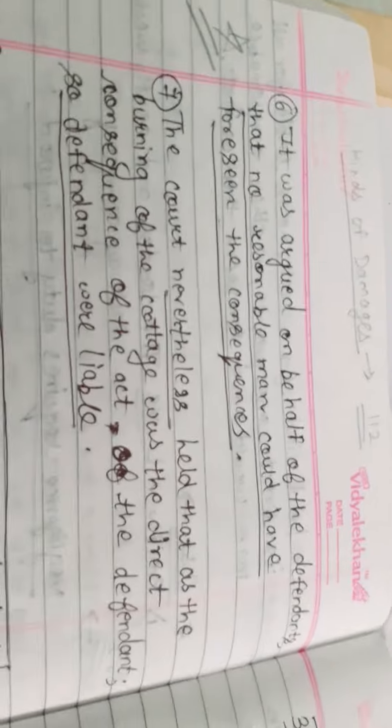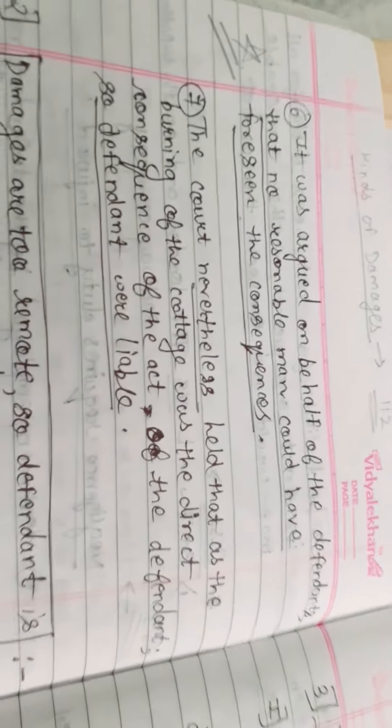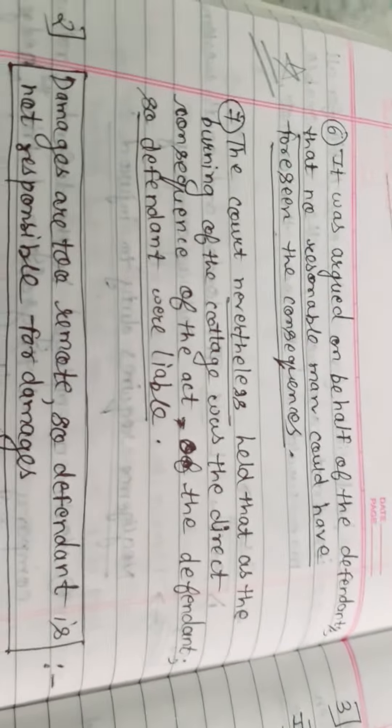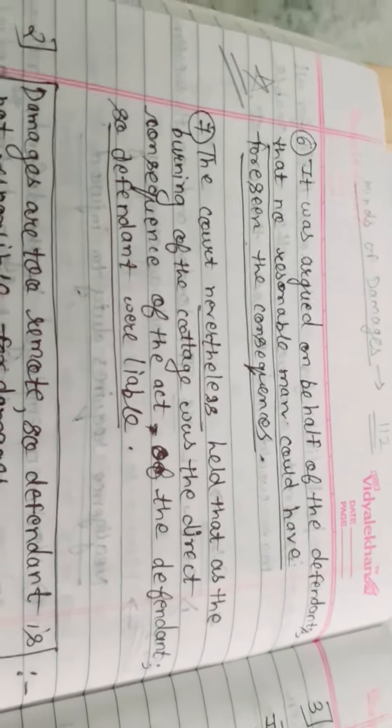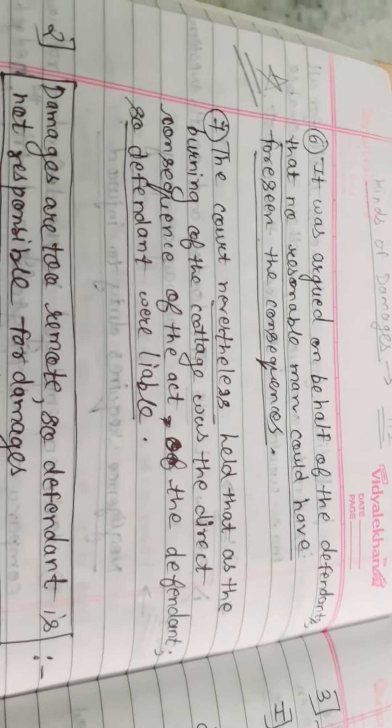It was argued on behalf of the defendant that no reasonable man could have foreseen the consequences. The court nevertheless held that as the burning of the cottage was the direct consequence of the act of the defendant, the defendant was liable, meaning the company was liable.